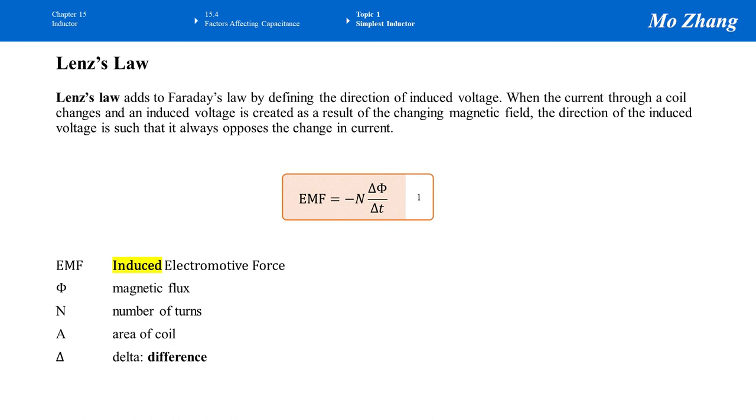And the number of turns times delta phi over delta t. Delta phi means the change in magnetic flux, the total number of magnetic field lines penetrating that area per unit time.